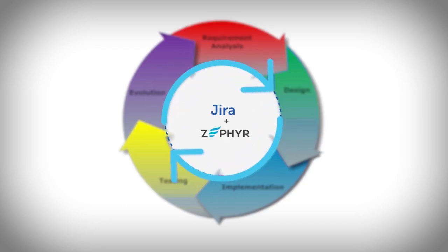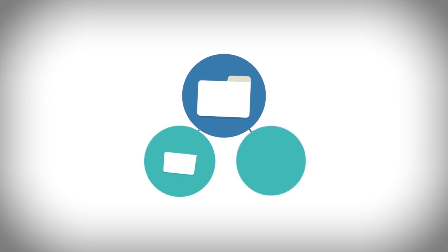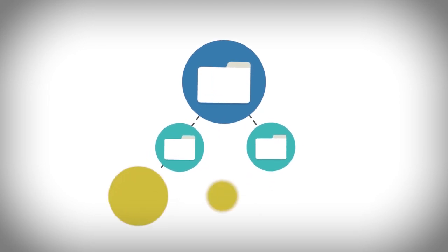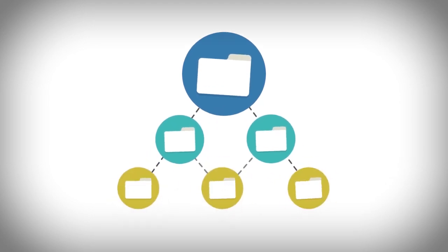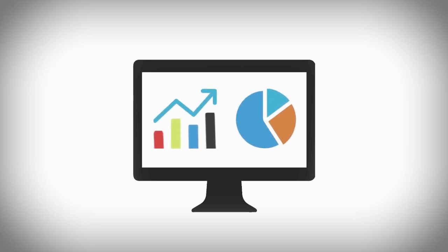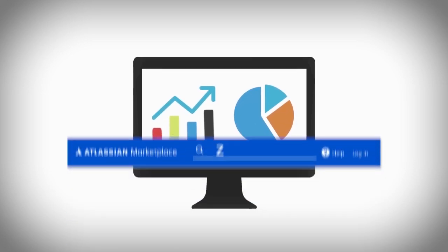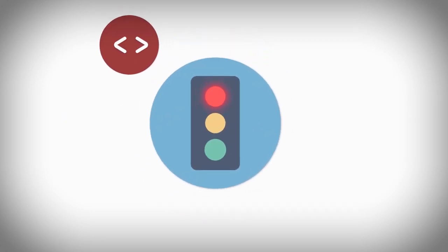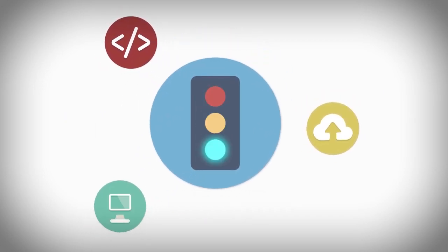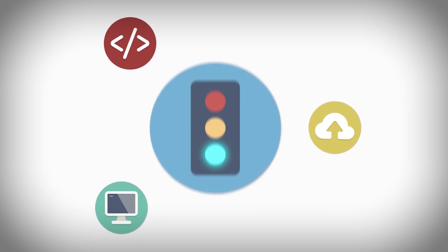Zephyr for Jira enhances test organization through a folder structure, enabling logical grouping of test cases within test cycles. It also easily integrates automation and continuous integration tools via Zappi, a powerful add-on tool that allows teams to conveniently retrieve tests for execution and programmatically update their results.